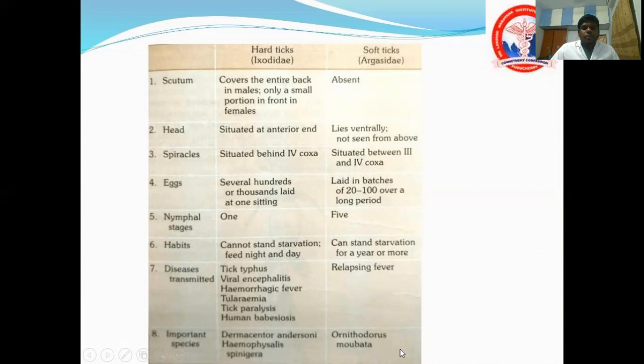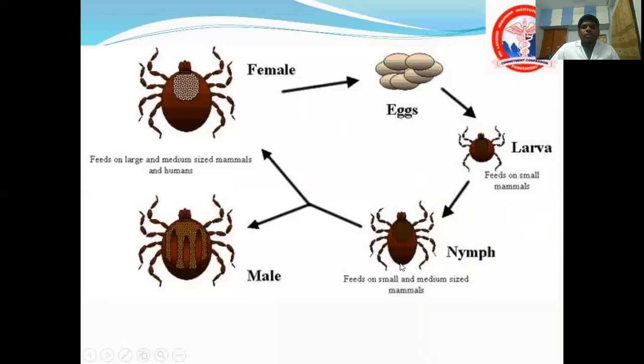Diseases transmitted by hard ticks include tick typhus, viral encephalitis, hemorrhagic fever, tularemia, tick paralysis, and human babesiosis. Soft ticks transmit relapsing fever. The life cycle is: egg, larva, nymph, and adult.